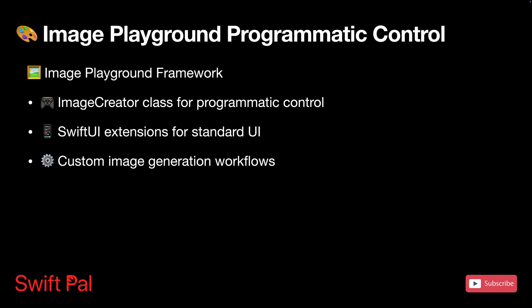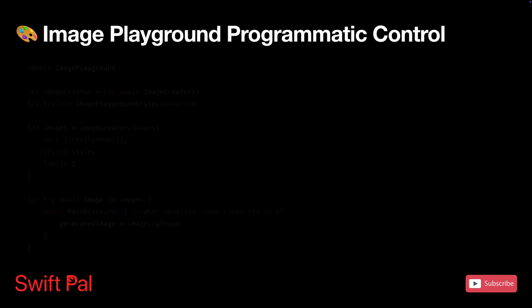The Image Playground framework gives you SwiftUI extensions to bring up the standard image generation interface, which is probably what most apps will use. But if you want to go beyond that default experience or need more control, now you have programmatic access. Think custom image generation workflows for social apps, dynamic visual content that adapts to what users are doing, or educational apps that create illustrations based on the content they're teaching.